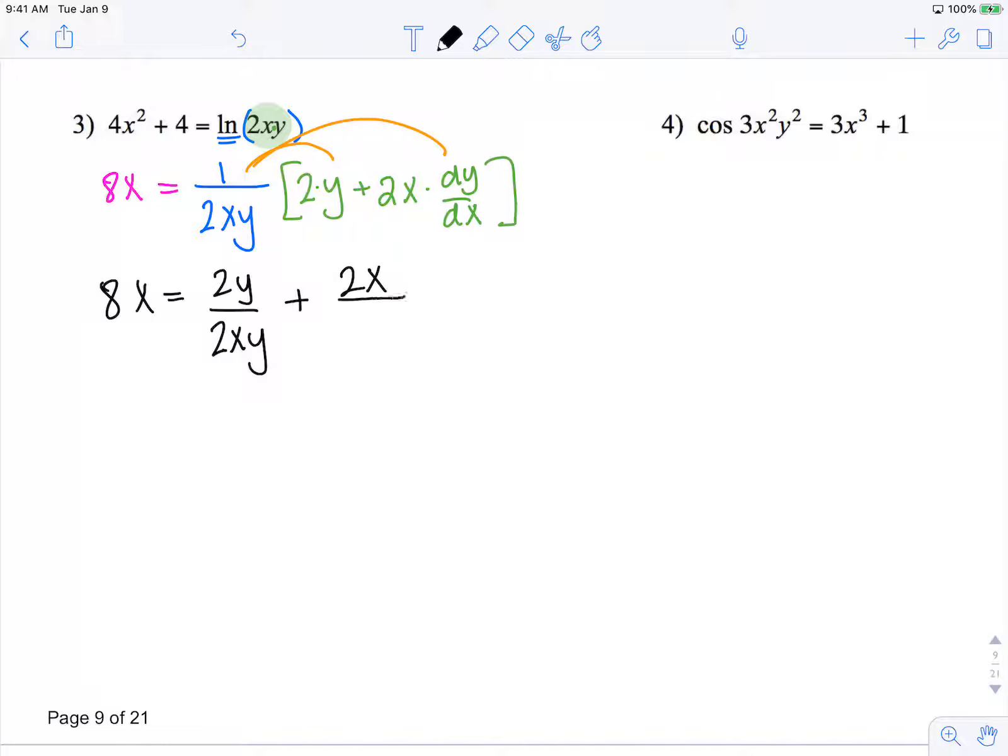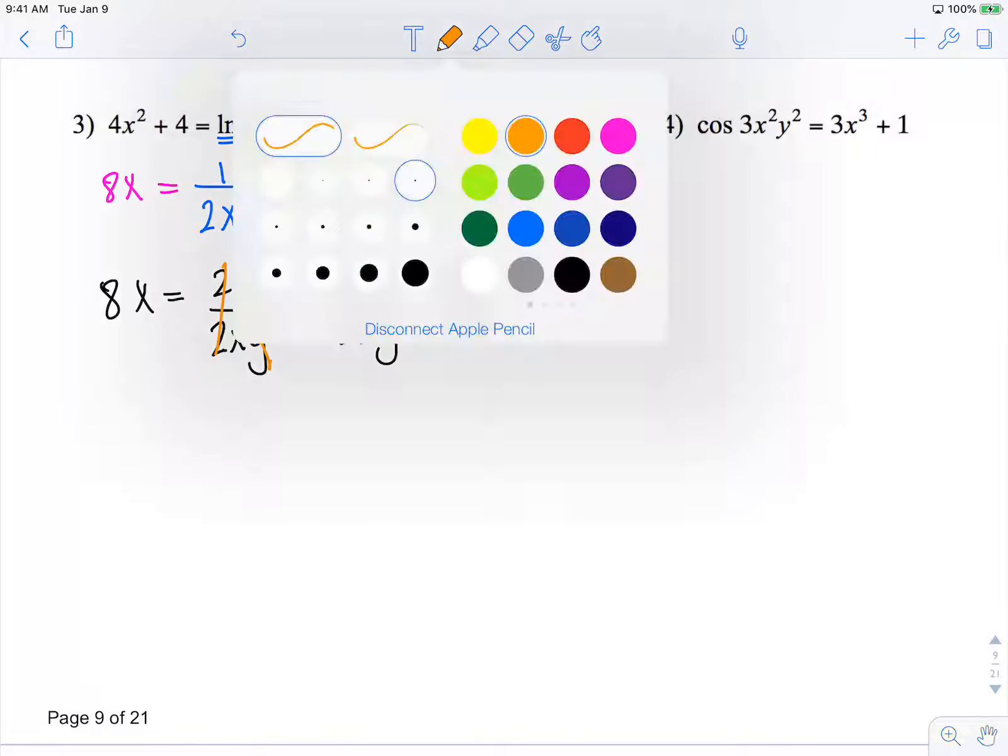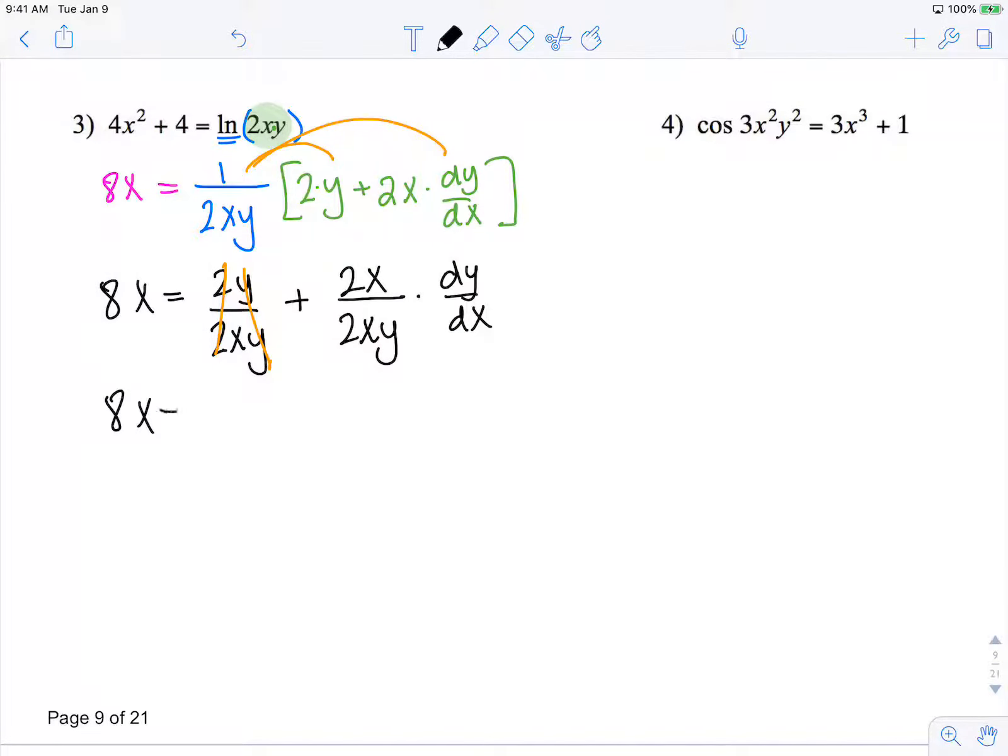2x over 2xy times dy/dx. Now these twos will cancel, these y's will cancel, so I have 8x equals 1 over x plus